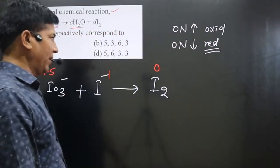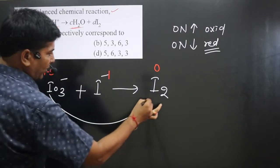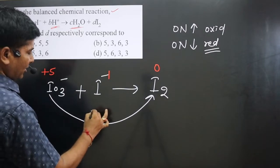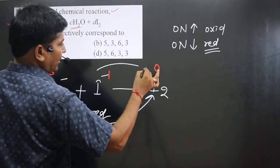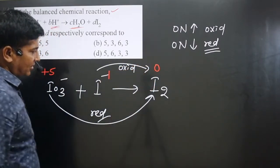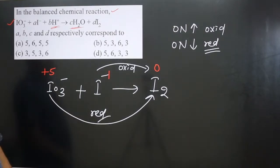We can now compare oxidation numbers. Iodine goes from +5 to 0 — a decrease — so this is a reduction reaction. Iodide ion goes from −1 to 0 — an increase — so this is an oxidation reaction. We have identified both the oxidation and reduction reactions, and we can now write these as separate half-reactions and balance them.